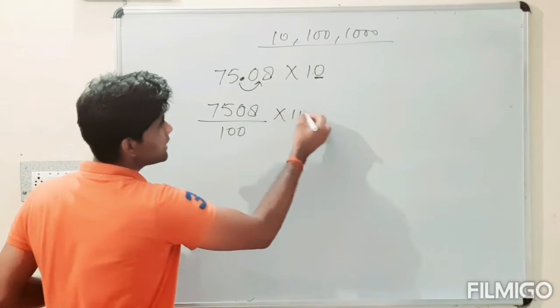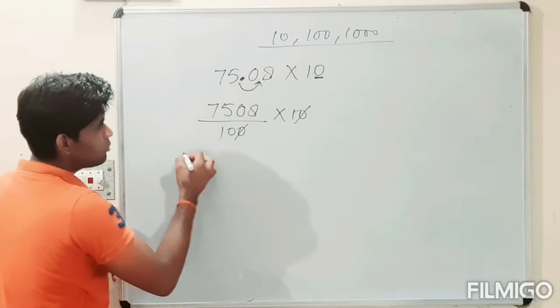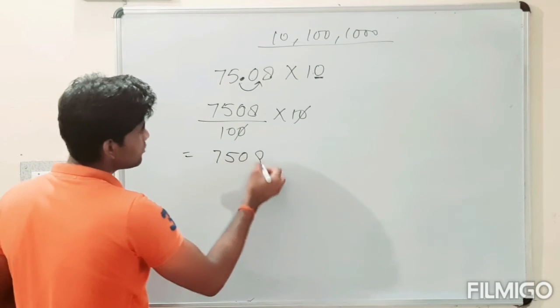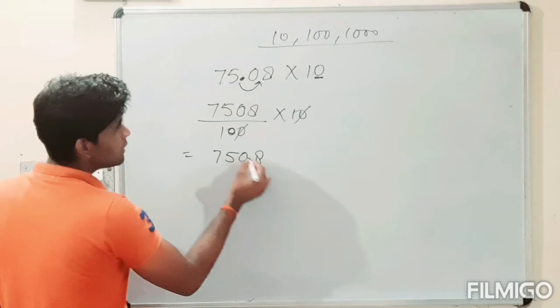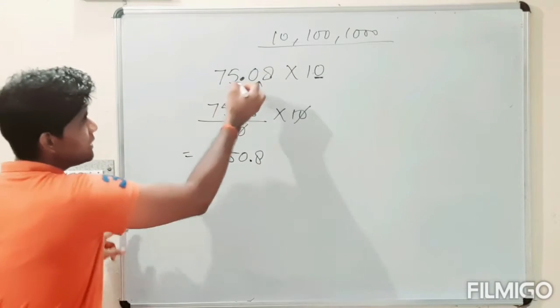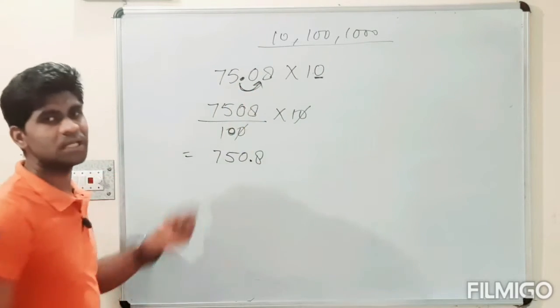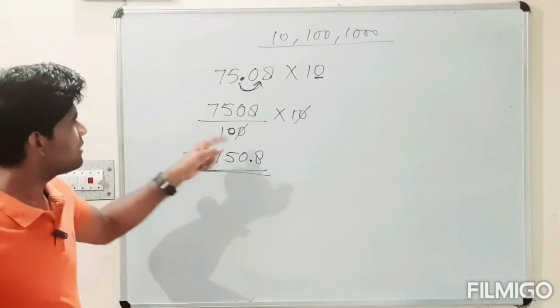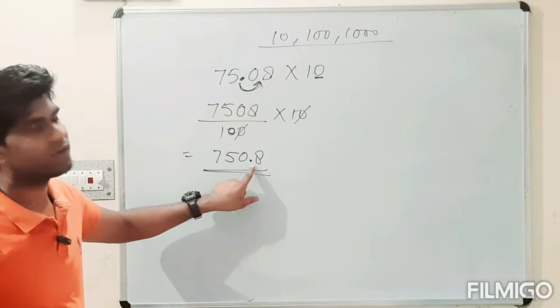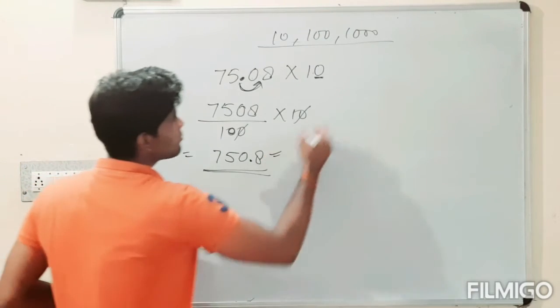Then multiply it by 10. 0 and 0 cancel out. Then 7, 5, 0, 8. Then here it is 0. 1 0 is there, we will put it here. So, look, this is transporting towards the right hand side. Simply after multiplying it or dividing it we will get 750.8. So, this is the required answer.